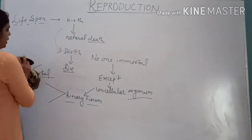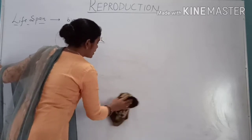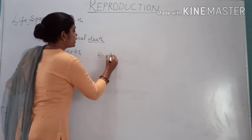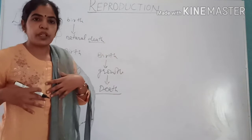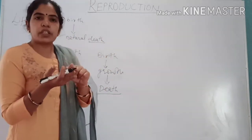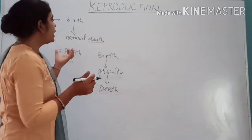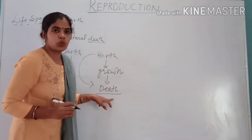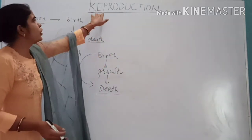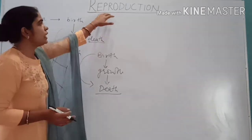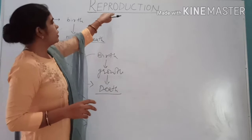Every organism gives birth to young ones, those young ones grow in size, and then produce new young ones. There is a cycle of birth, growth, and death. Different life processes — like nutrition, respiration, excretion, and circulation — continue our life. Although death is certain, there must be some process which can continue the organism even after its death. And that process is reproduction.